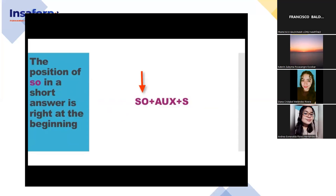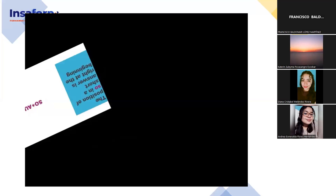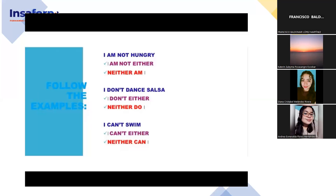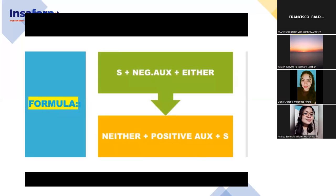With 'so,' the auxiliary comes before the subject. Now let's study 'neither' and 'either.' To show agreement with negative statements, we use 'neither' and 'either,' also with the auxiliary verb. Use the negative auxiliary with 'either,' and the positive auxiliary with 'neither.' Examples: 'I am not hungry' — 'I am not either' or 'neither am I.' 'I don't dance salsa' — 'I don't either' or 'neither do I.' 'I can't swim' — 'I can't either' or 'neither can I.' The formula: subject + negative auxiliary + either; neither + positive auxiliary + subject.